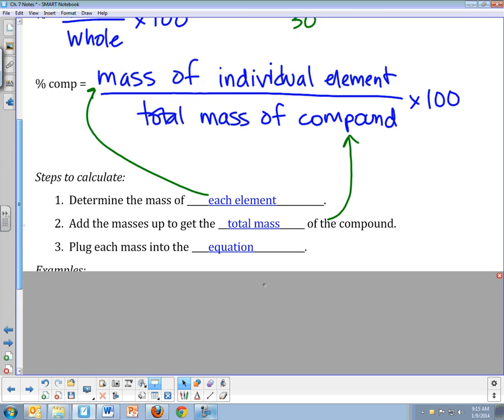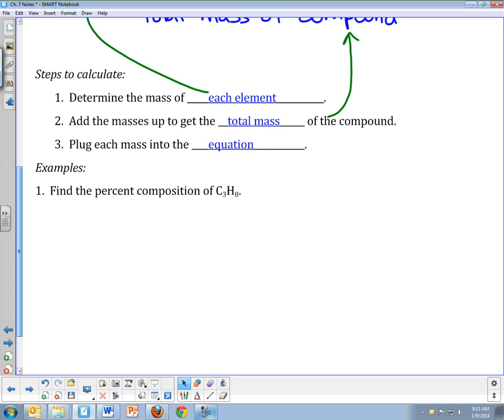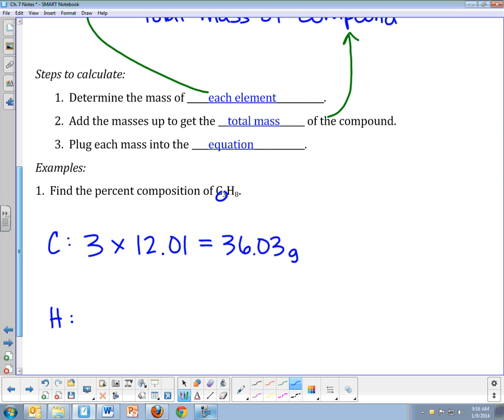So let's do two examples of this. The first one says find the percent composition of C3H8. So we're going to have two different percents, a percent of carbon and a percent of hydrogen. It helps to be really organized when you write out these problems. I list my elements first. So I have carbon and I have hydrogen. Now I want to say how many I have of each. There are three carbons, and each one has a mass of 12.01. That's the atomic mass on your periodic table. So three times 12.01 is going to give me 36.03 grams. That's the mass of all the carbon in this molecule.